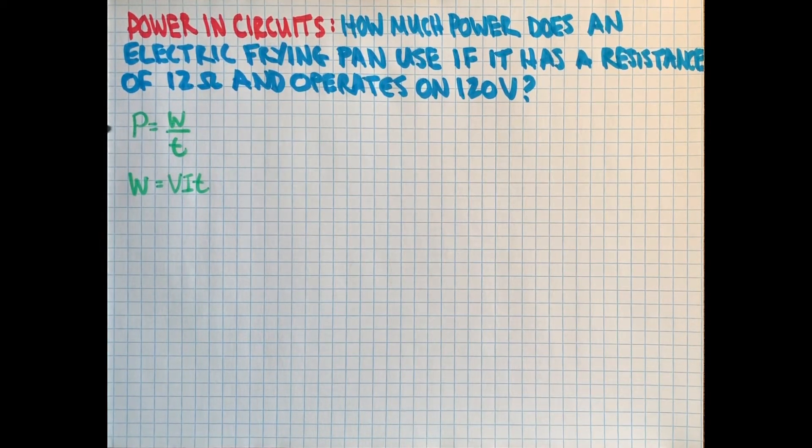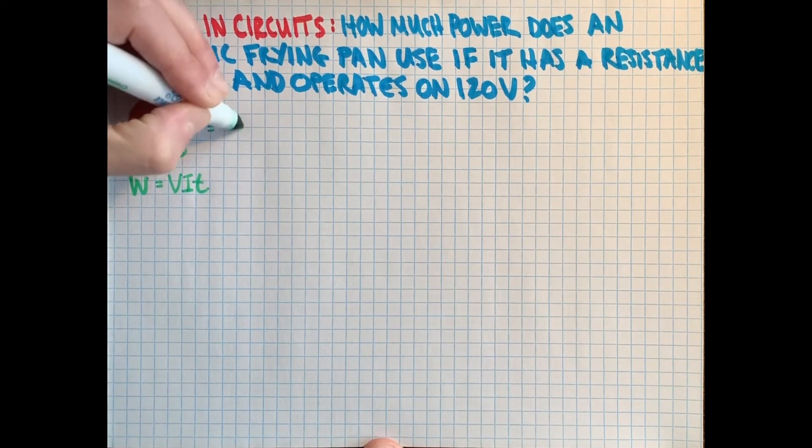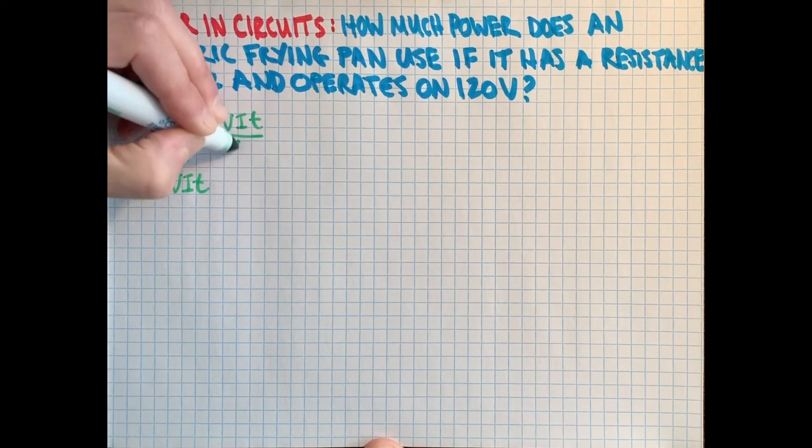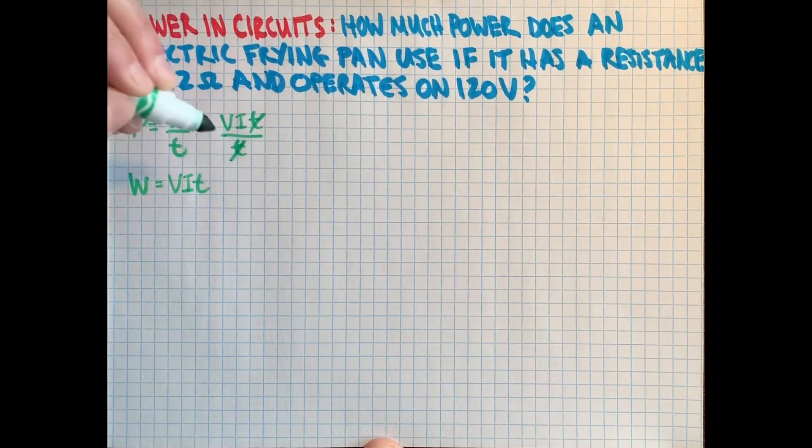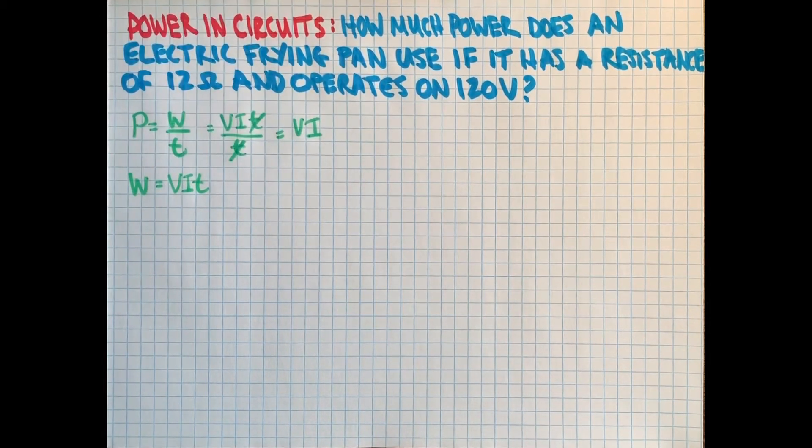But I can put that into this formula and say then, instead of work, I'll put VIT. And then look at that, it's over time. And so that disappears.